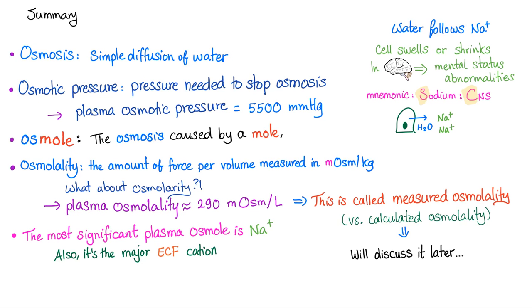So, let's summarize. Osmosis, simple diffusion of water. Osmotic pressure, pressure needed to stop osmosis. The normal plasma osmotic pressure is around 5500. Osmol, osmosis caused by a mole. Osmolality, the amount of force per volume, measured milliosmols per kilogram or milliosmols per liter in cases of osmolarity, which we're going to talk about in the next video. Plasma osmolality, 290 normally, milliosmols per liter, per volume, force per volume. This is called measured osmolality. Don't confuse this with calculated osmolality and we will discuss this later.